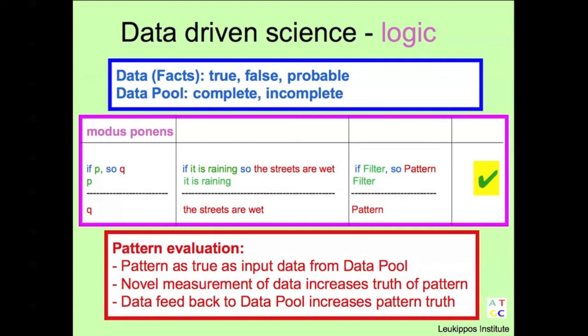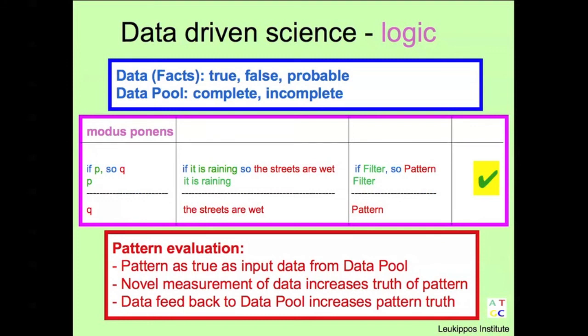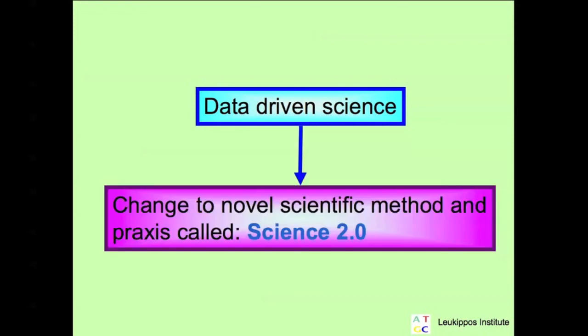It does not matter if the pattern is by a robot, if it's artistic, based on materialism or idealism or whatever. The data-driven science approach changes the scientific method and results in a praxis called science to zero.